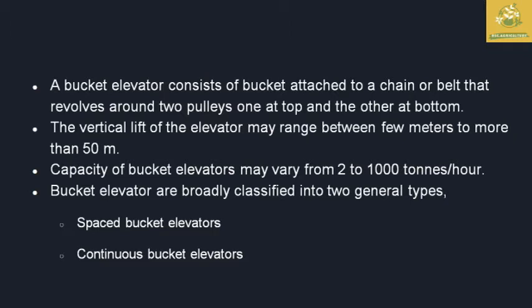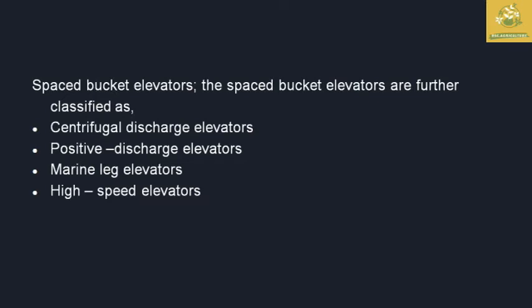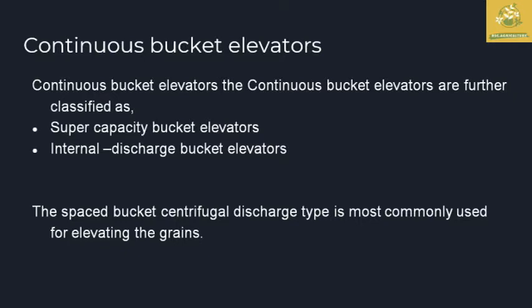The bucket elevator is broadly classified into two types: spaced bucket elevators and continuous bucket elevators. The major types in spaced bucket elevators are centrifugal discharge elevators, positive discharge elevators, marine leg elevators, and high speed elevators. Continuous bucket elevators are classified into two sub-types: super capacity bucket elevators and internal discharge bucket elevators, where the distance between each bucket is less than in spaced ones. The spaced bucket centrifugal discharge type is most common for elevating grains in industries.